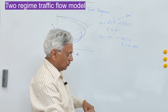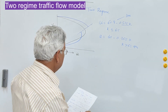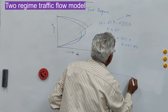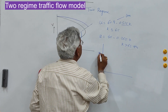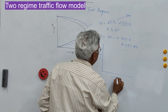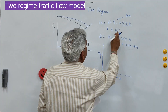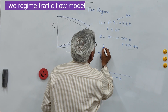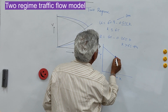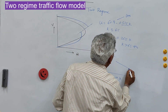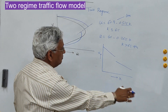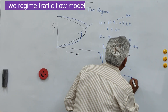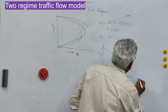For uncongested conditions you have a higher slope and higher free flow speed; for congested flow you have a lower slope. When you plot the speed-density curve, this uncongested part will be steeper and the congested part will be a flatter slope, finally meeting the x-axis at the jam density.